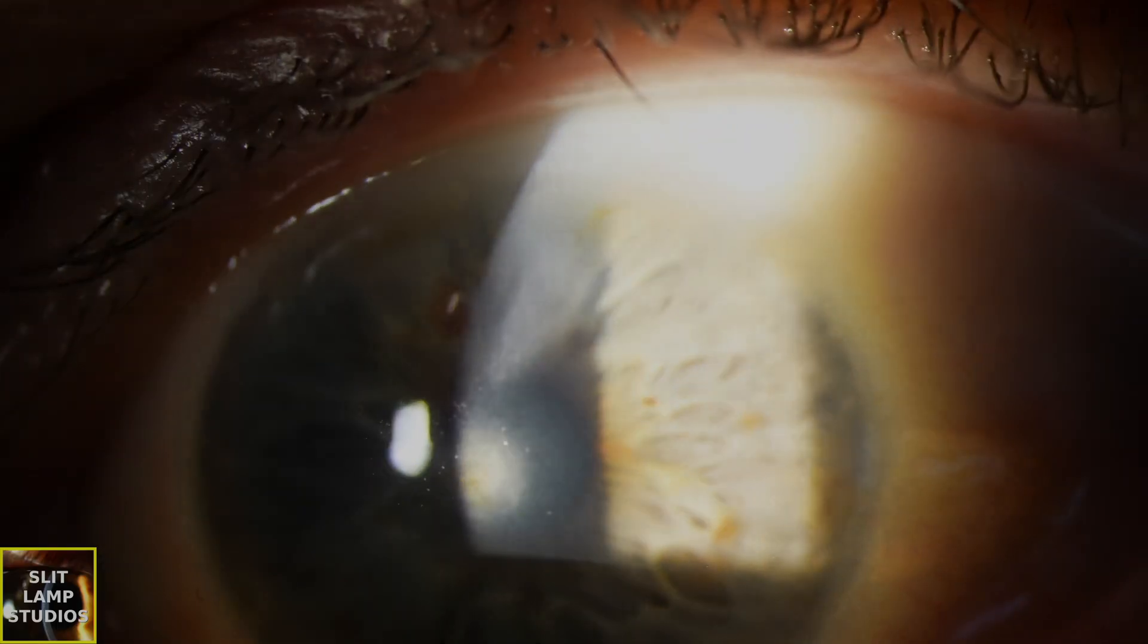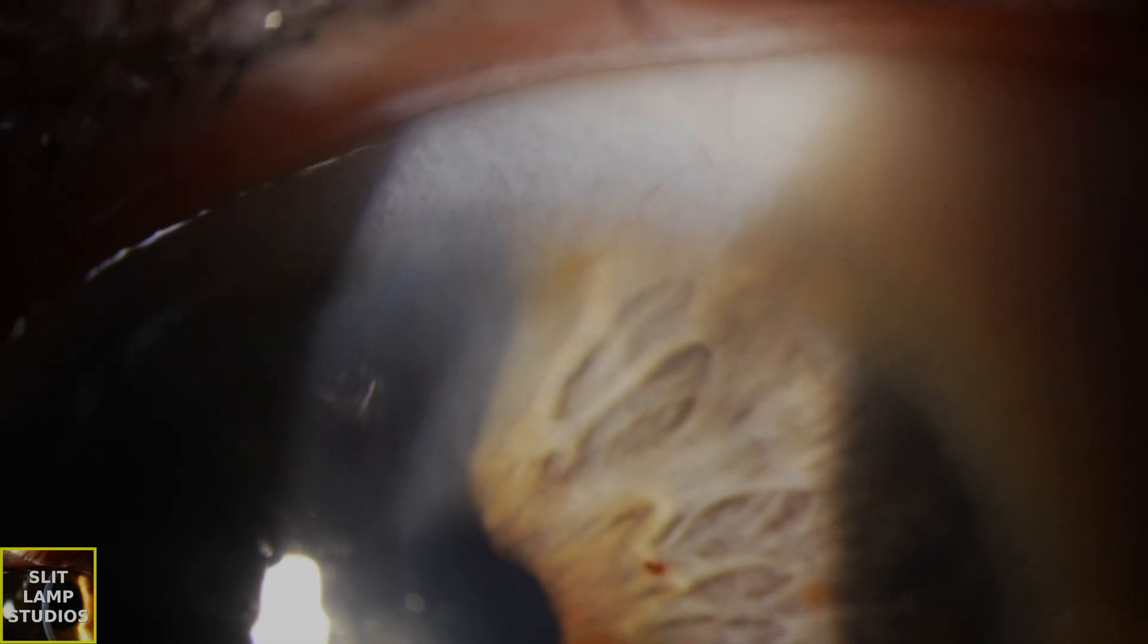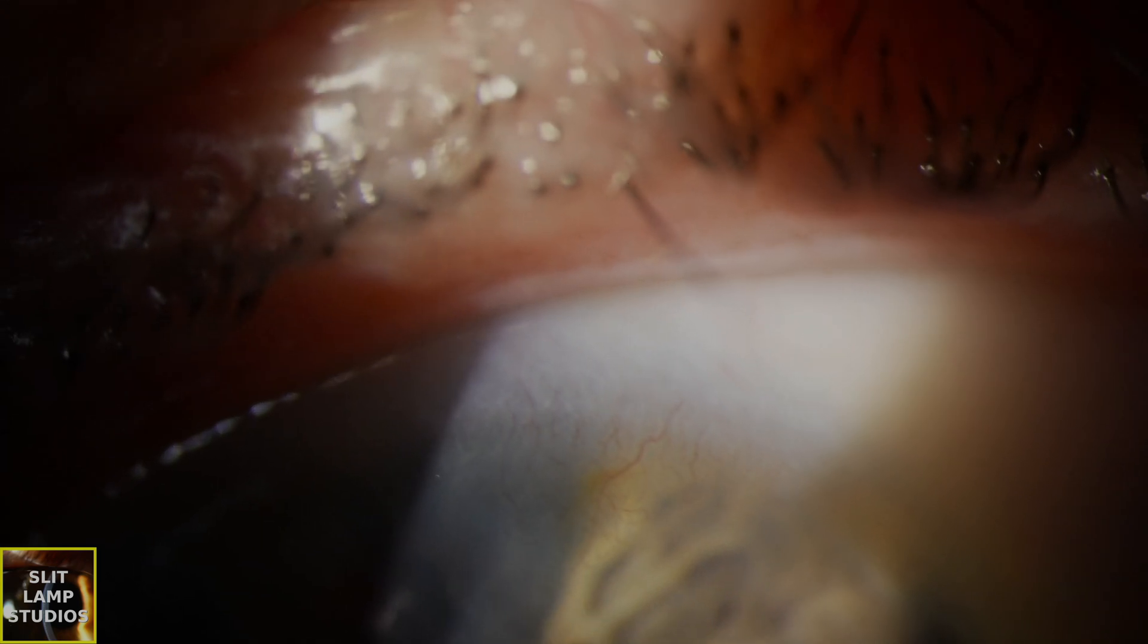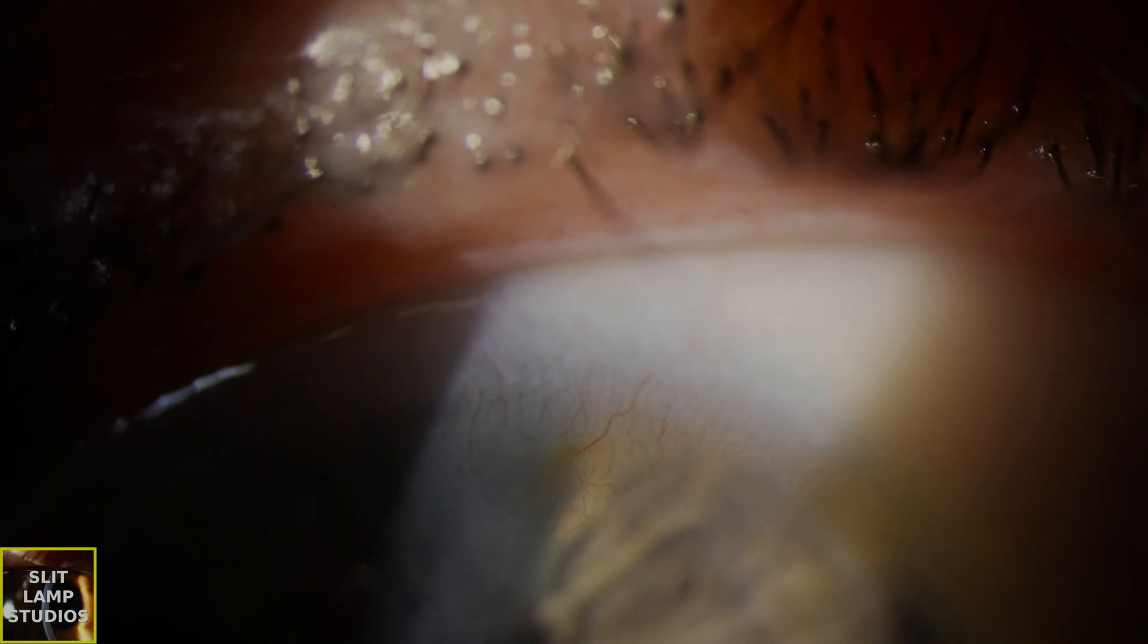You can see that there are some central-involving lesions there and you can see some iron deposition within that central lesion, which tells you the chronicity. You can also see some iron deposition in the more peripheral superior scarring and also some area of corneal neovascularization superiorly.